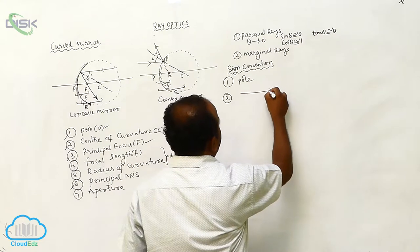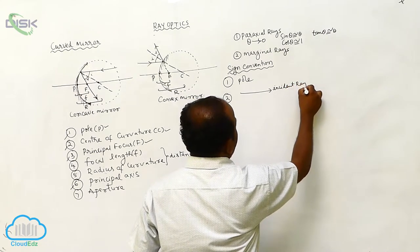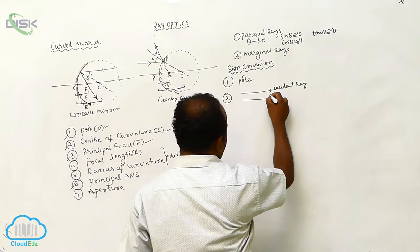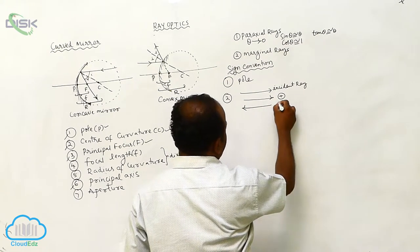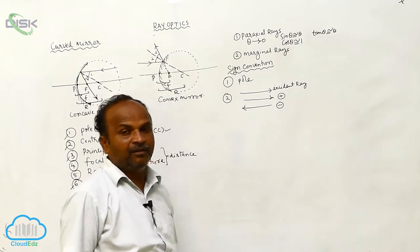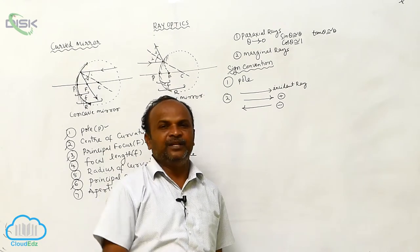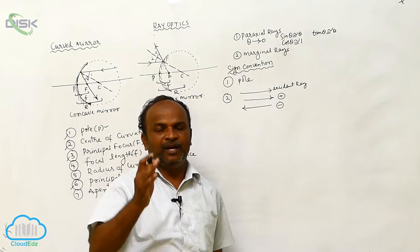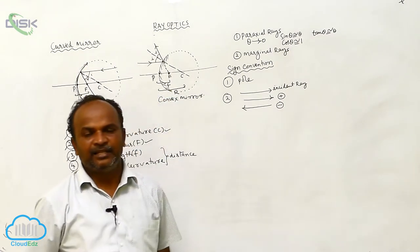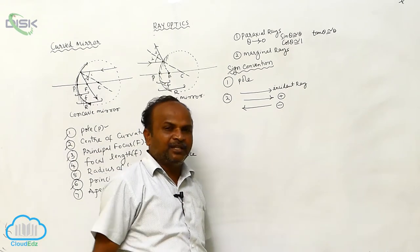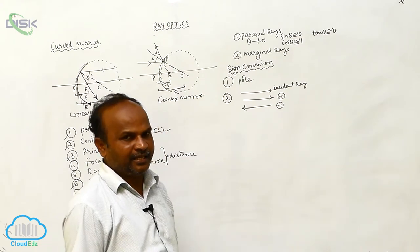Second one: suppose there is a particular incident ray direction. If the distance measured along the incident ray is taken as positive, the distance measured opposite to the incident ray is taken as negative. While observing the ray diagram, see the direction of the incident ray — how the light ray coming from the object is allowed to fall on the mirror. That means there is an incident ray direction.